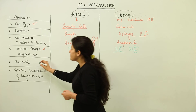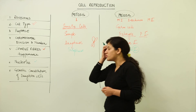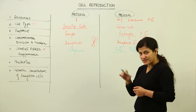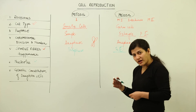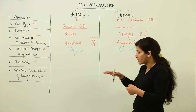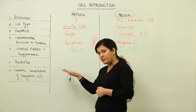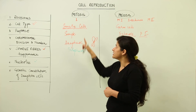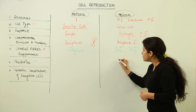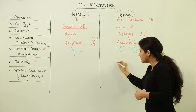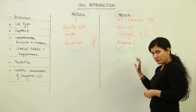Then we talk about the nucleolus. The nucleolus is important for RNA synthesis and is present in the nucleus. In mitosis, the nucleolus reappears during telophase. In meiosis, it will not reappear in telophase one, but it does reappear in telophase two.